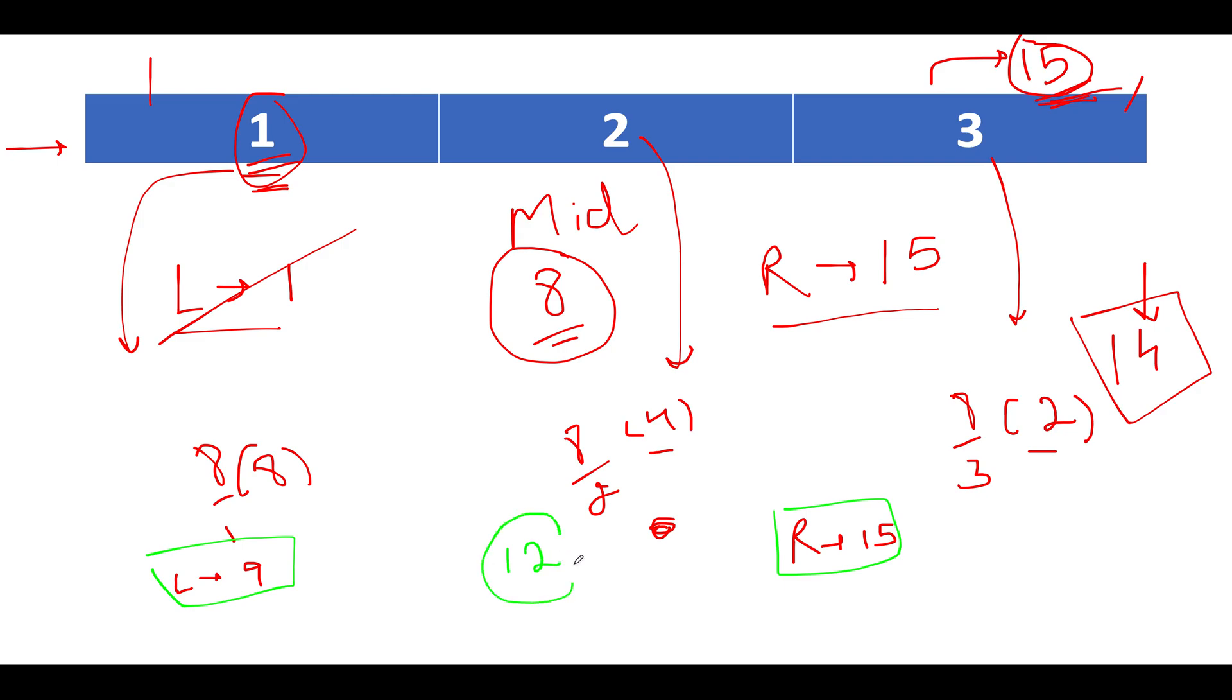Let's assume that the total trip time happens to be 12, and given this time, how many trips can be concluded? So 12 by 1 gives me 12, 12 by 2 gives me 6, 12 by 3 gives me 4. So the total trip count would be 12 plus 6 is 18, 18 plus 4 is 22.